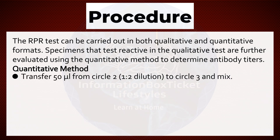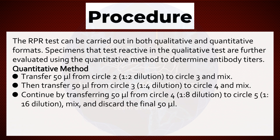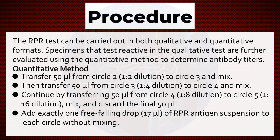Transfer 50 microliters from circle 2 (1:2 dilution) to circle 3 and mix. Then transfer 50 microliters from circle 3 (1:4 dilution) to circle 4 and mix. Continue by transferring 50 microliters from circle 4 (1:8 dilution) to circle 5 (1:16 dilution). Mix and discard the final 50 microliters. Add exactly 1 free-falling drop (17 microliters) of RPR antigen suspension to each circle without mixing.